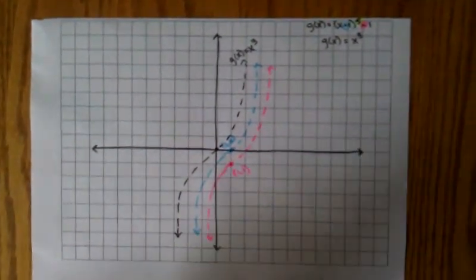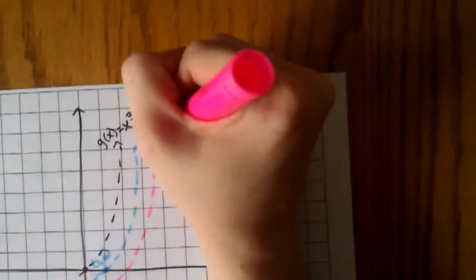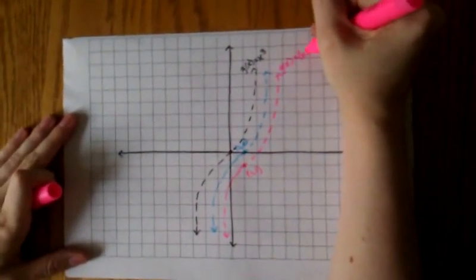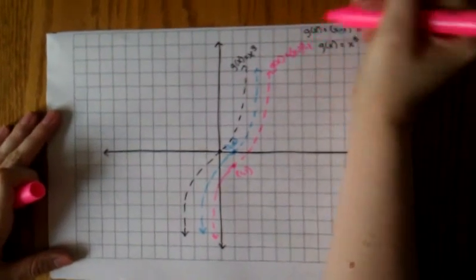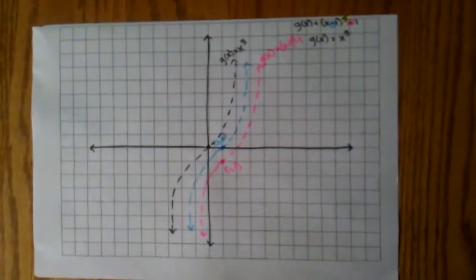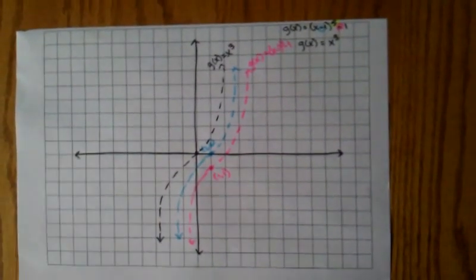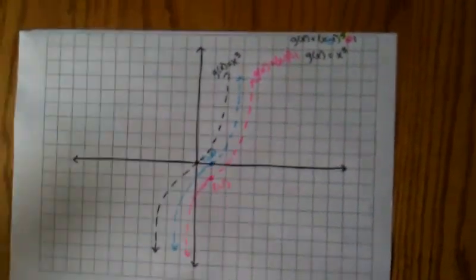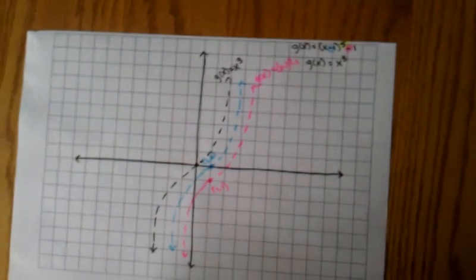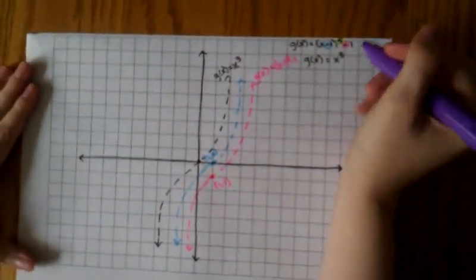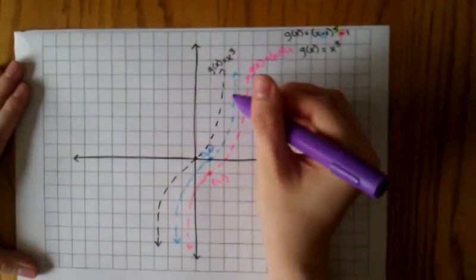Now, because this is g(x) = (x-1)^3 - 1, we now have to get the graph of (x-1)^5 - 1. So to do this, we move the graph in towards the y-axis.